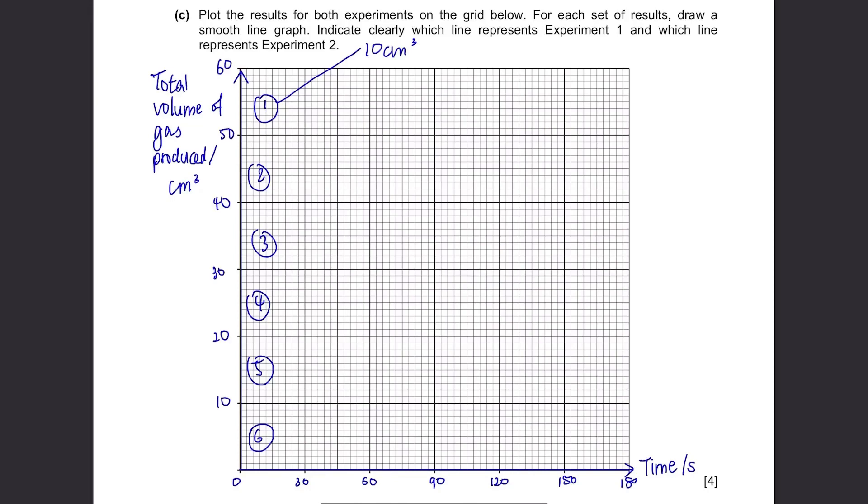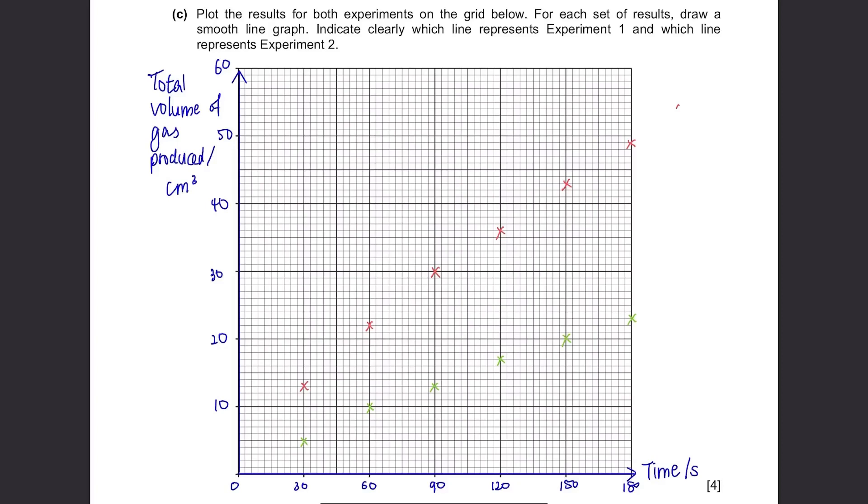Now it's time to plot them. Make sure you don't make any mistakes here. Okay, this is how it looks like and after we connect the dots, it's like this. Finally, we need to show which graph stands for which experiment. This is the complete answer.